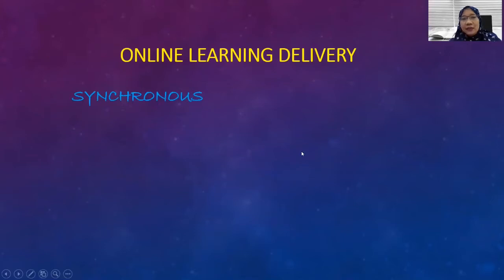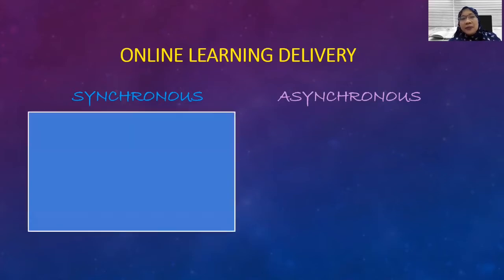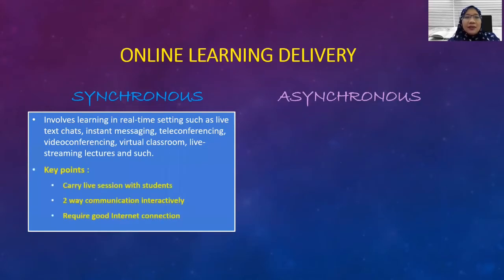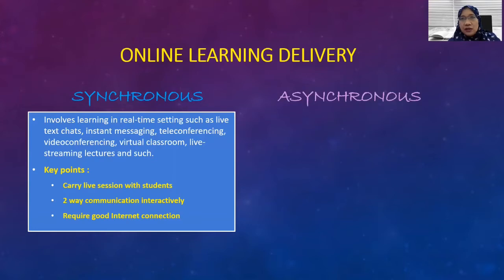Online delivery can be divided into two types: synchronous or asynchronous. Synchronous involves learning in real-time settings such as live text chats, instant messaging, teleconferencing, video conferencing, virtual classroom, and live streaming. The key points for synchronous delivery: you must be able to carry a live session with students — it is two-way communication interactively, and it requires a good internet connection because you need to perform Q&A sessions online.